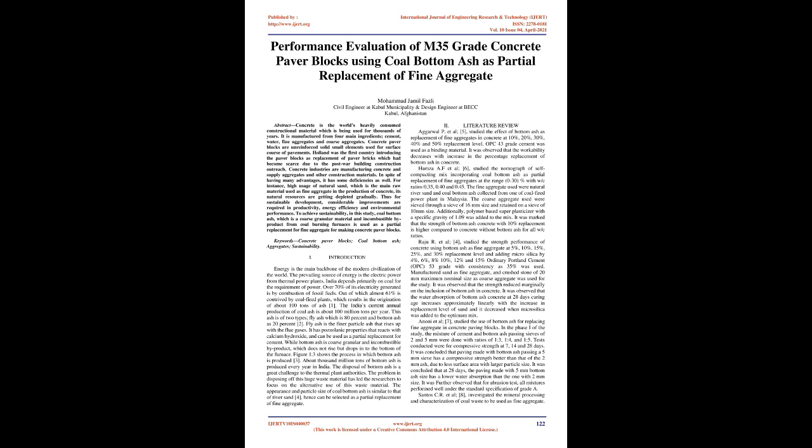This ash is of two types: fly ash, which constitutes 80%, and bottom ash, which constitutes 20%. Fly ash is the finer particle ash that rises up with the flue gases. It has pozzolanic properties that react with calcium hydroxide and can be used as a partial replacement for cement. Bottom ash is a coarse granular and incombustible by-product which does not rise but drops to the bottom of the furnace.